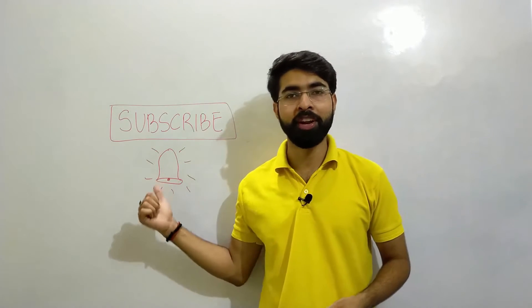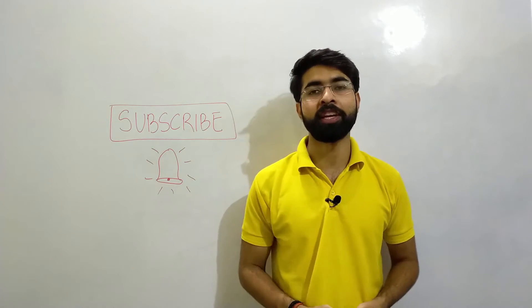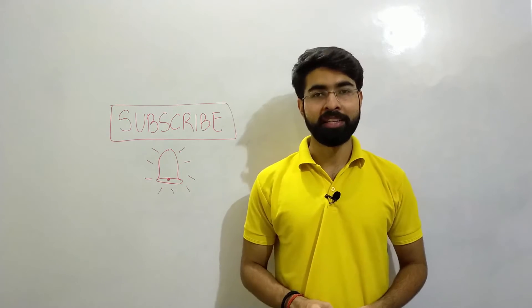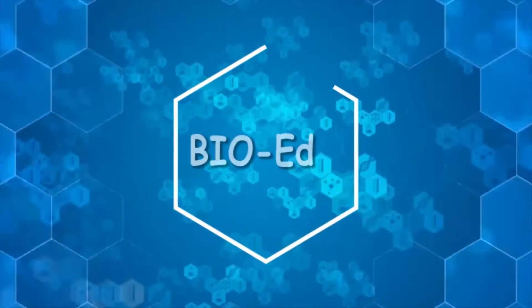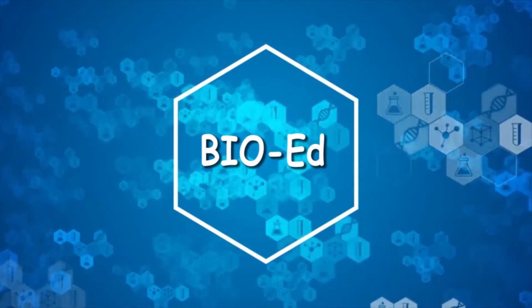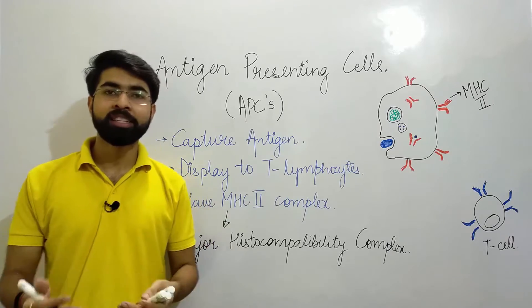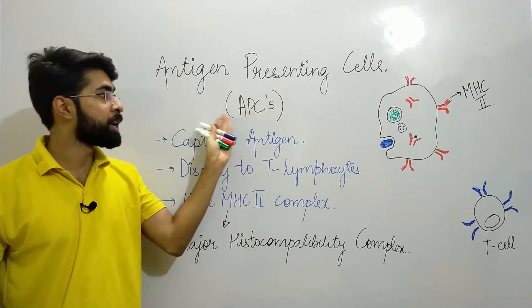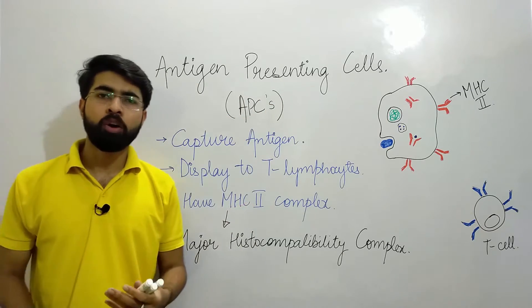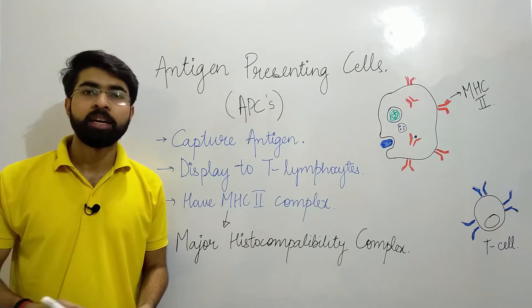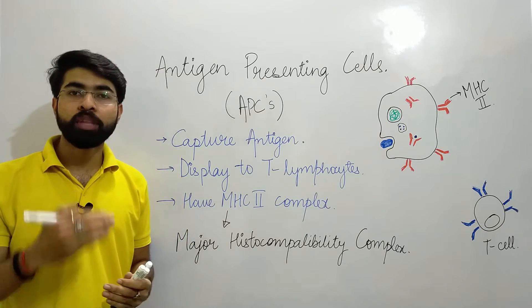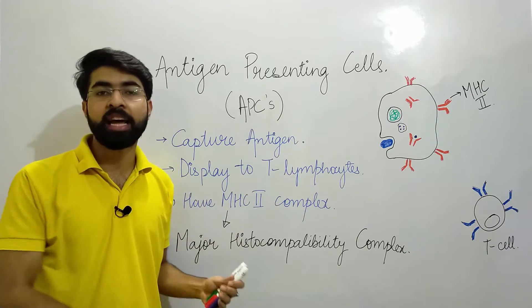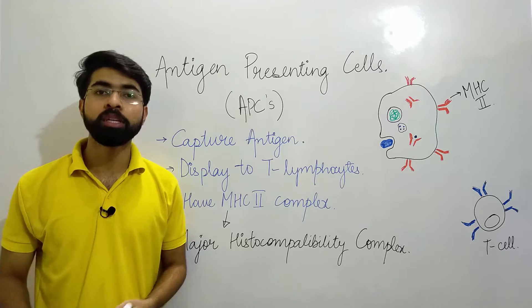Before we get started, do make sure you hit the subscribe button and turn on notifications so that you don't miss any videos in the near future. Now, let us discuss about antigen presenting cells, also known as APCs. Why are they called antigen presenting cells? As the name suggests, they perform the function of presenting antigens to other cells — that is, the cells of the adaptive immune system.